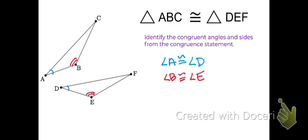And we can do the same for angle B and E, the middle letters in labeling our triangles, and the same for angle C and F, the last letters when labeling our two triangles.